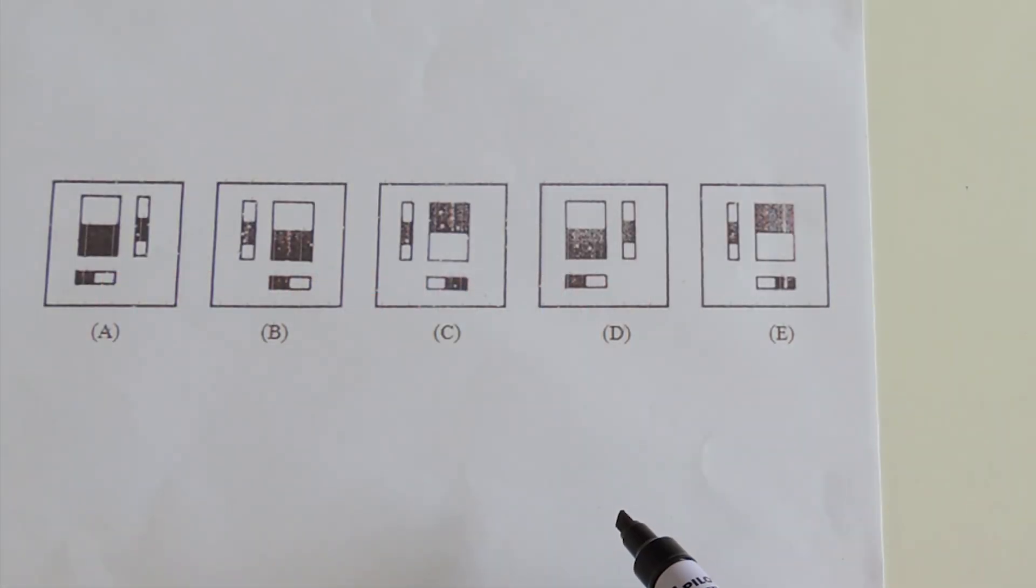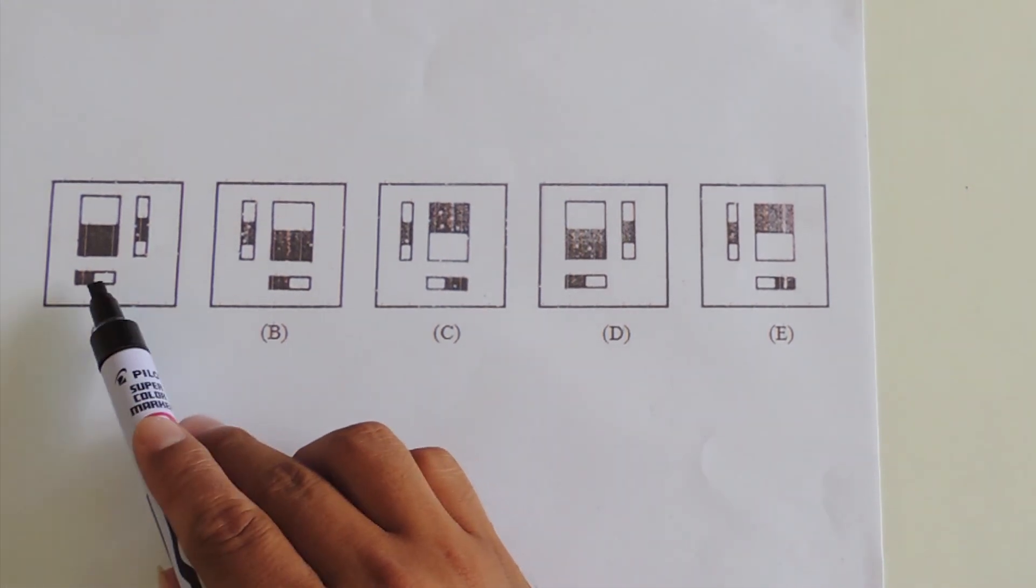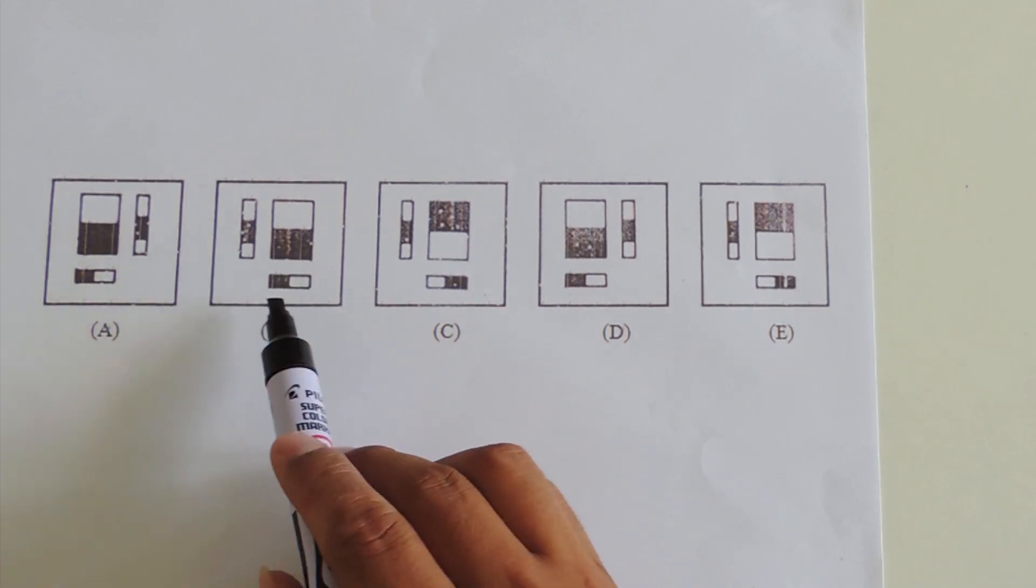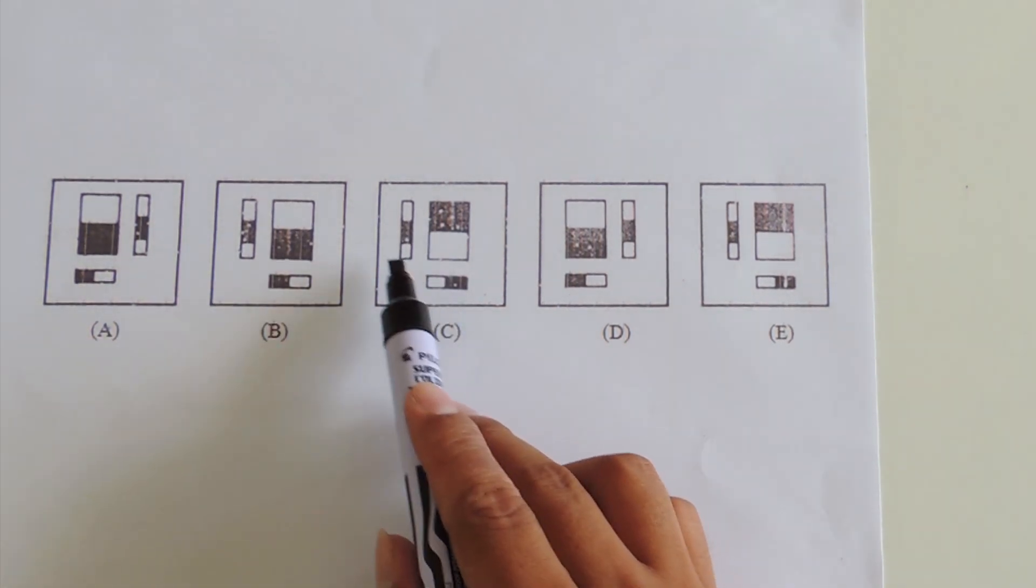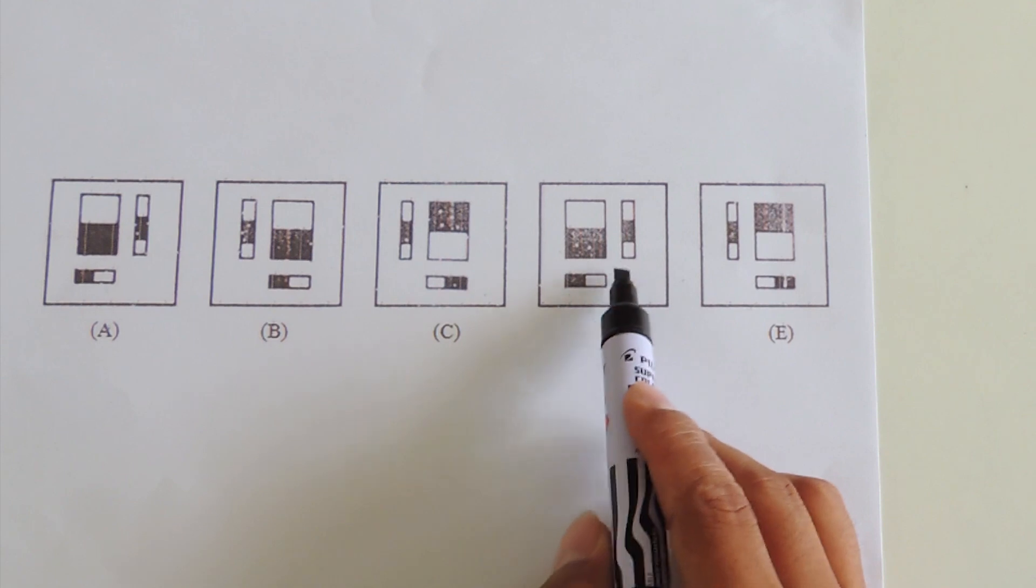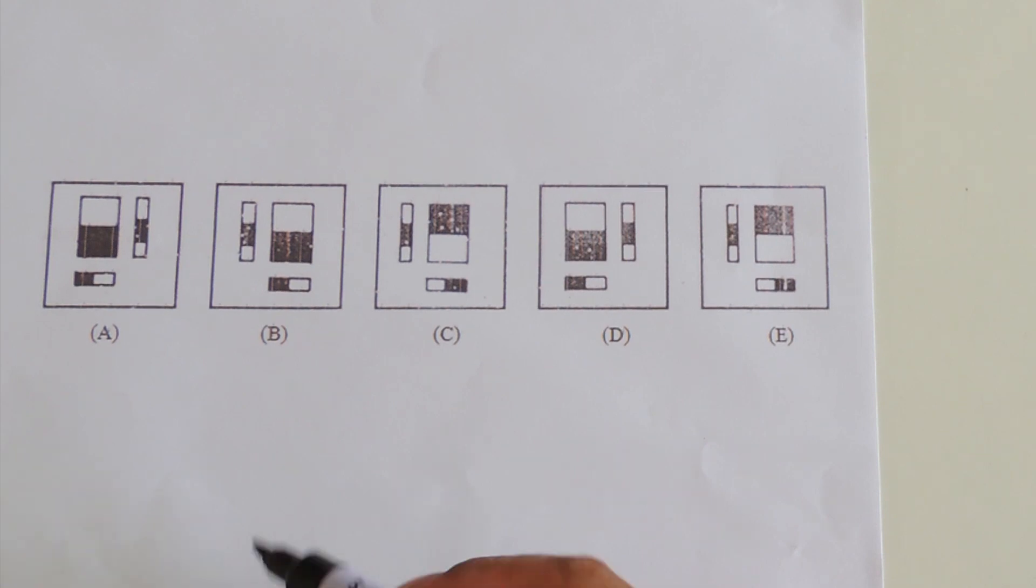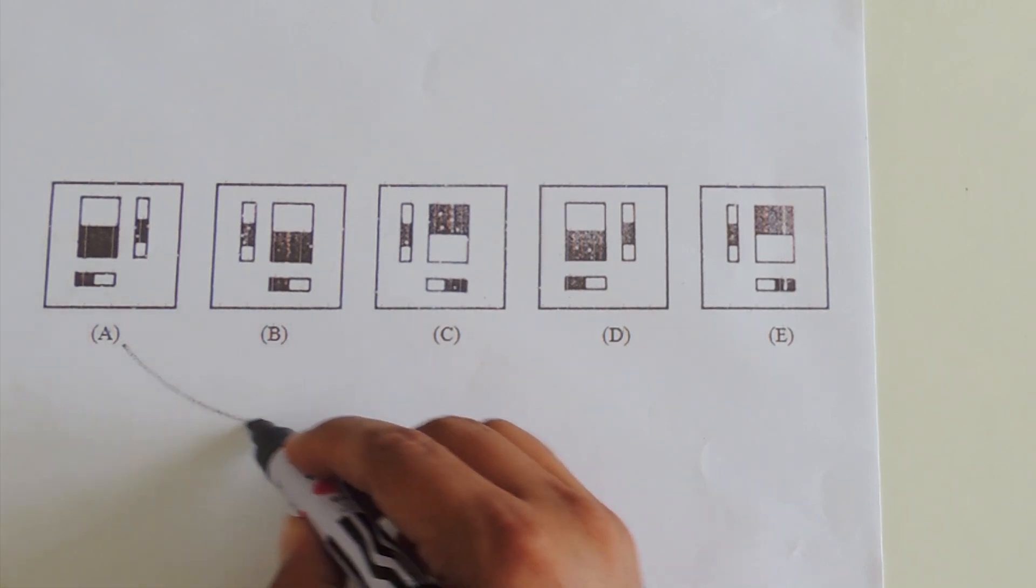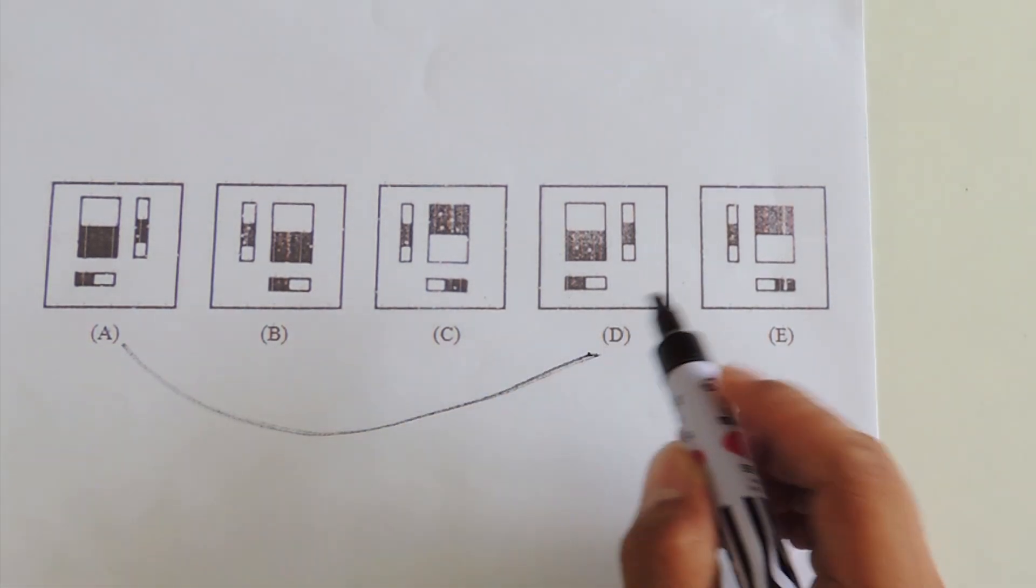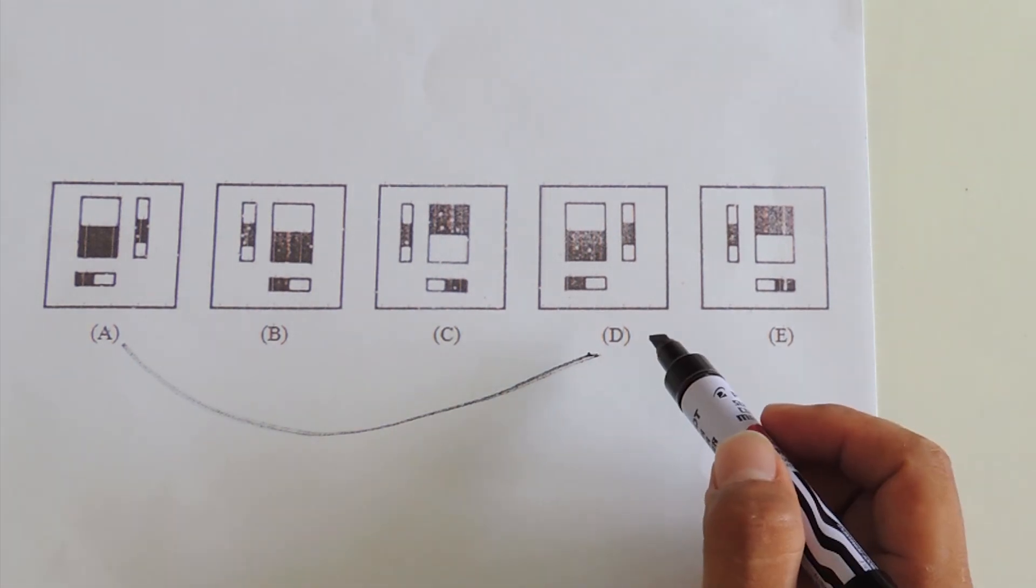Here's another example for a figure grouping problem. Observe that we have connecting parts. By that, we could eliminate options A and D since these two are actually similar.